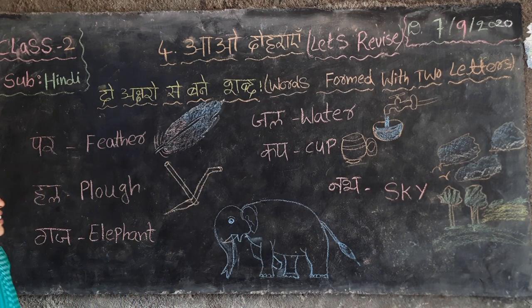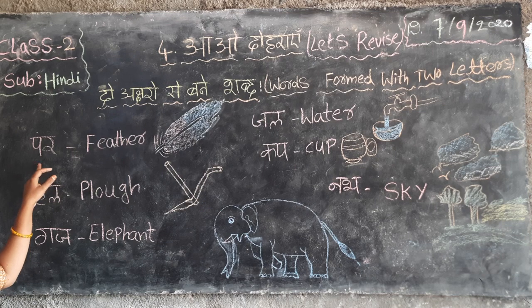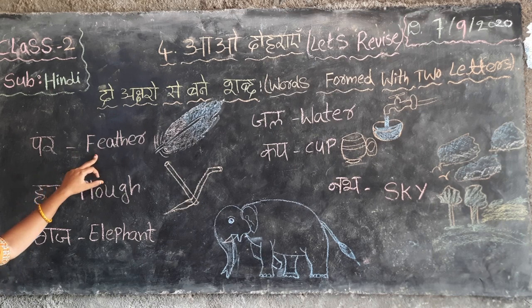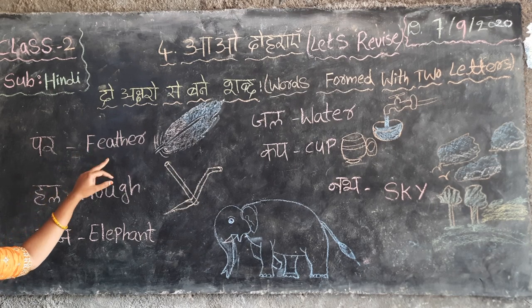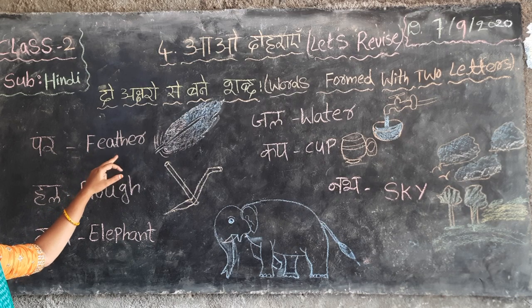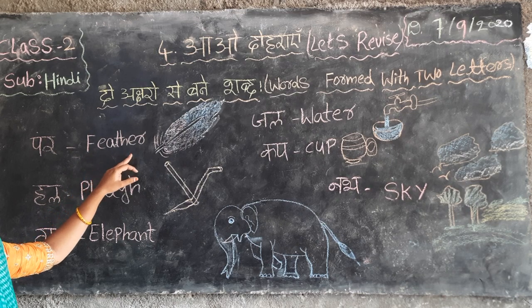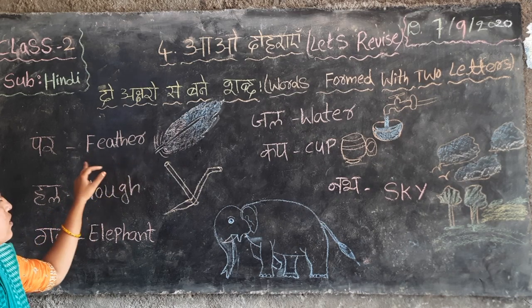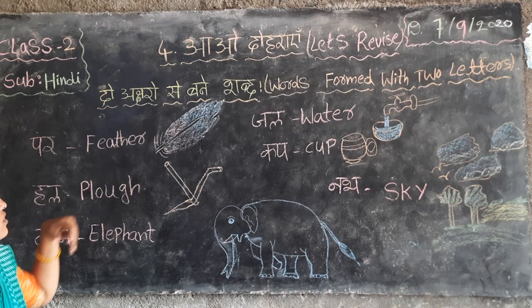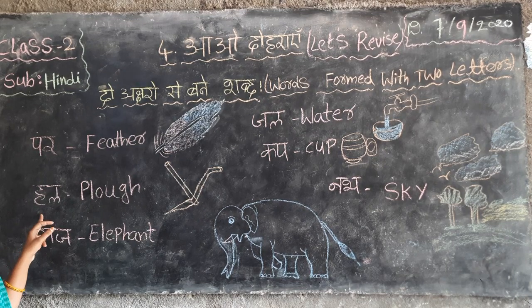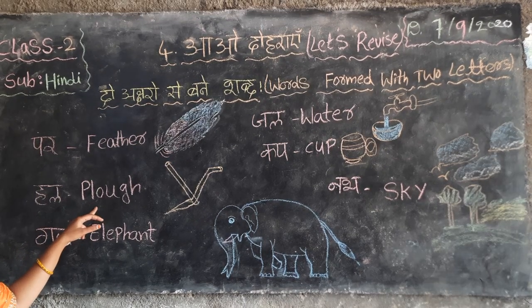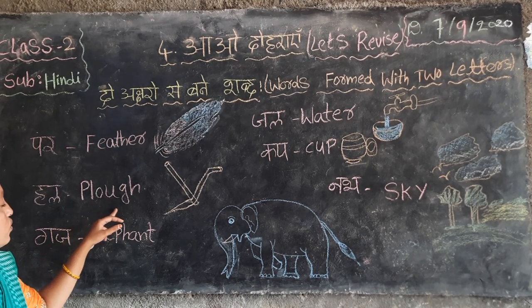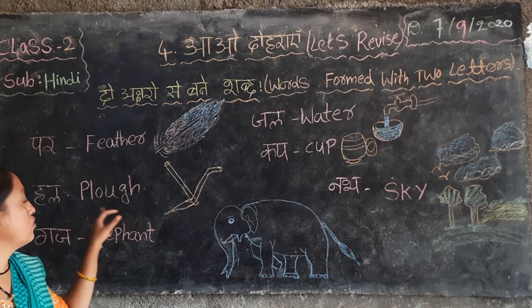And once again repeat. Perk — feather, F-E-A-T-H-E-R, feather. Hull — flower, P-L-O-U-G-H, flower.